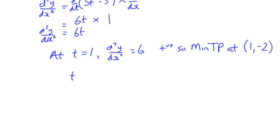And when t is -1, our second derivative is going to be -6. That's negative, obviously. So we have a maximum turning point at (-1, 2).